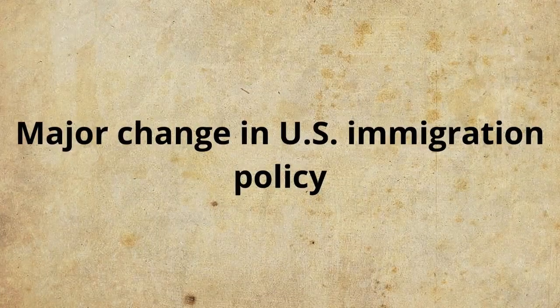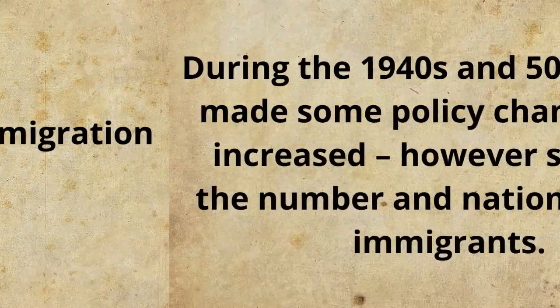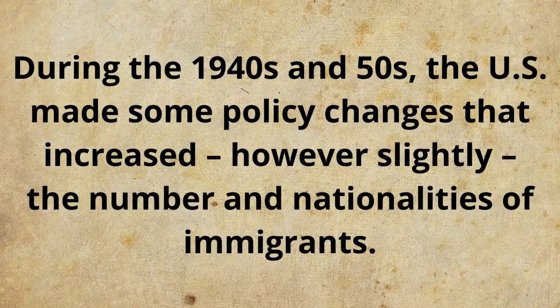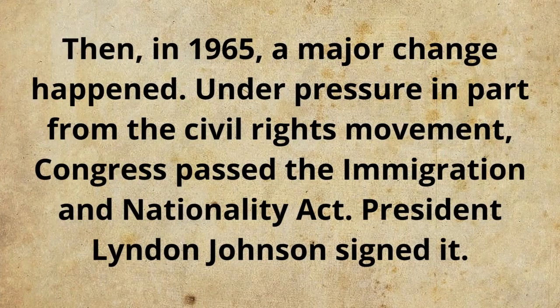During the 1940s and 50s, the US made some policy changes that increased, however slightly, the number and nationalities of immigrants. Then, in 1965, a major change happened. Under pressure in part from the civil rights movement, Congress passed the Immigration and Nationality Act. President Lyndon Johnson signed it.